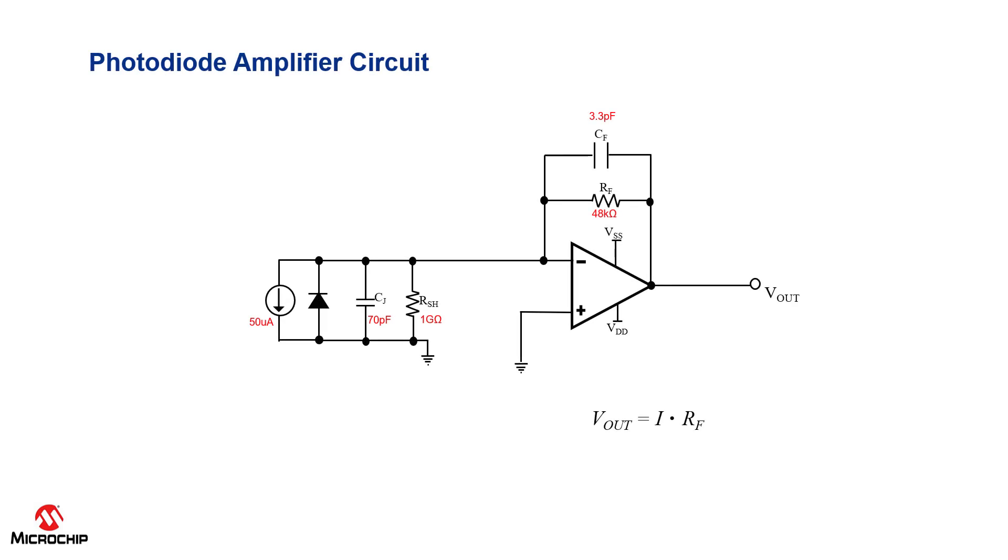The main purpose of the photodiode amplifier circuit is to convert current generated by the photodiode into an output voltage. So how do we design this circuit?